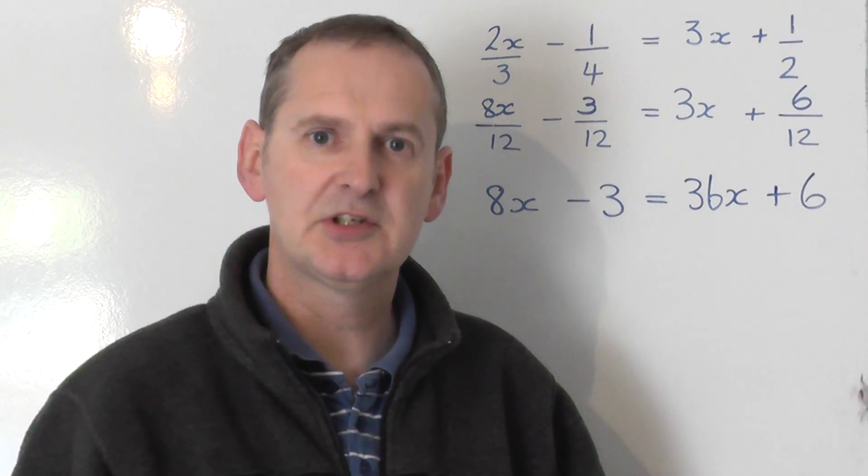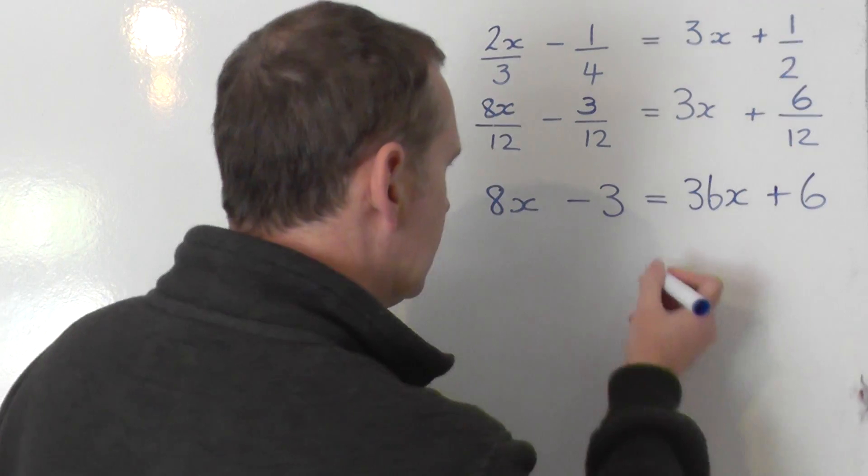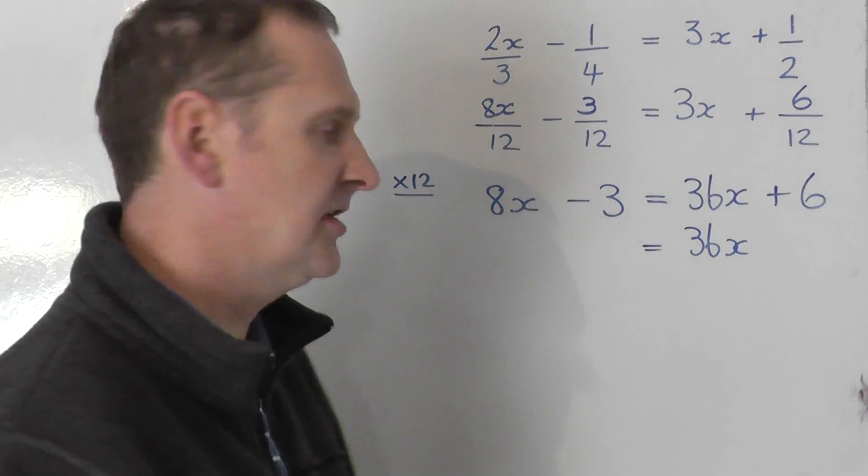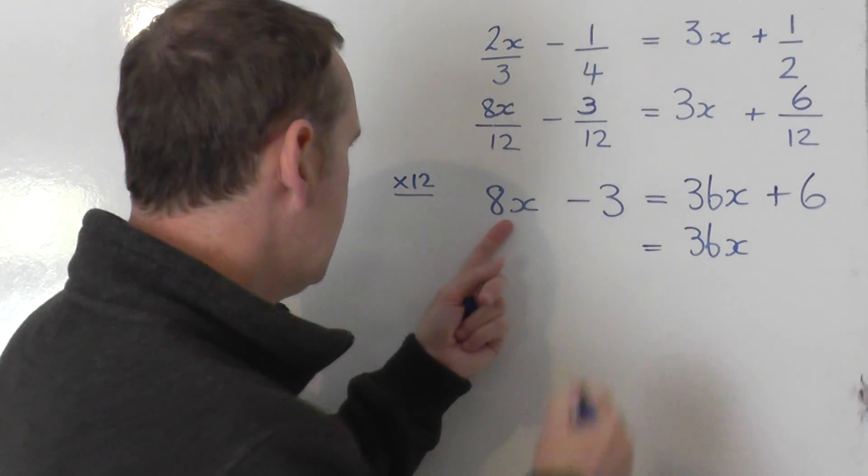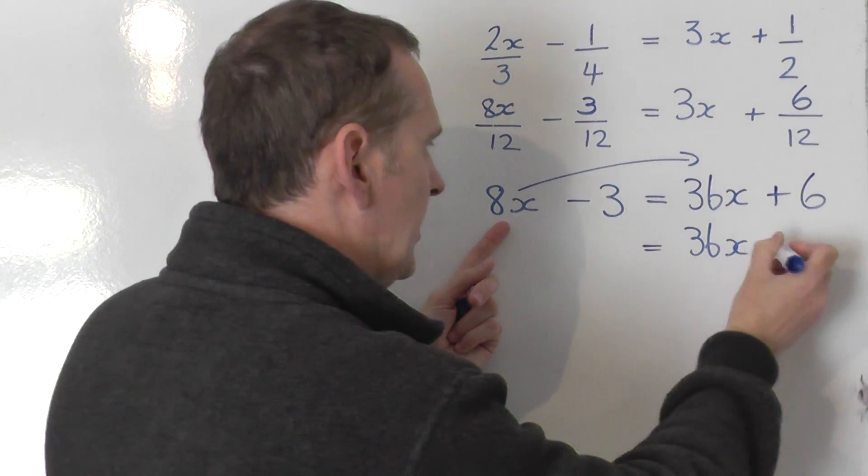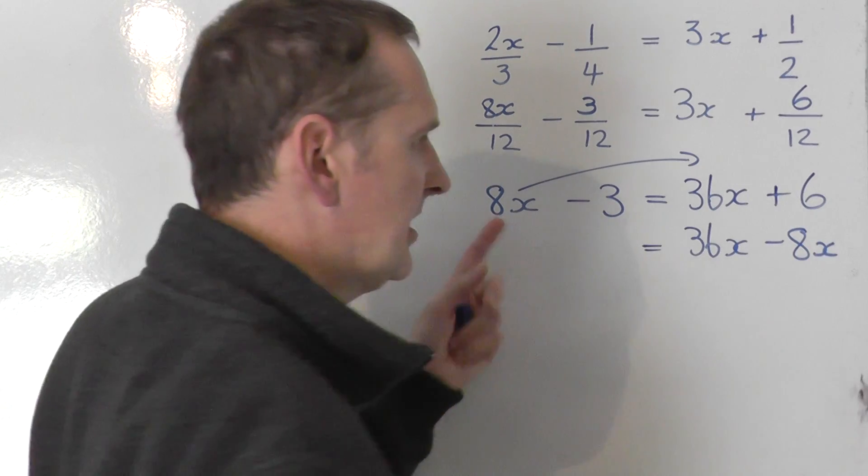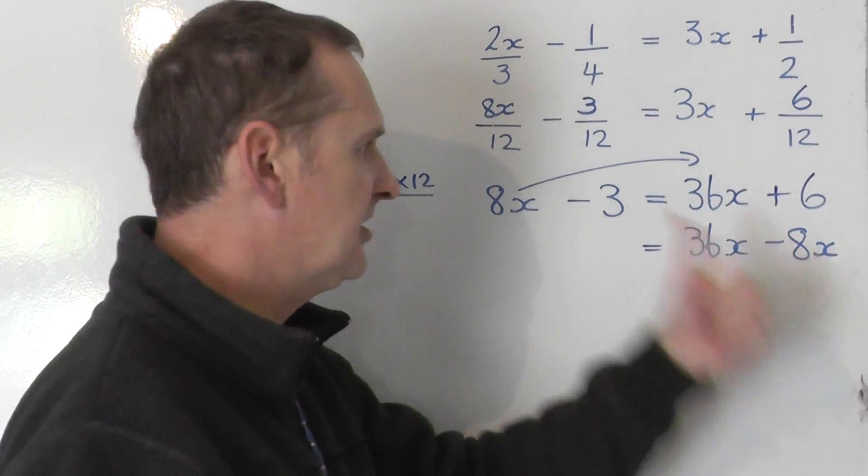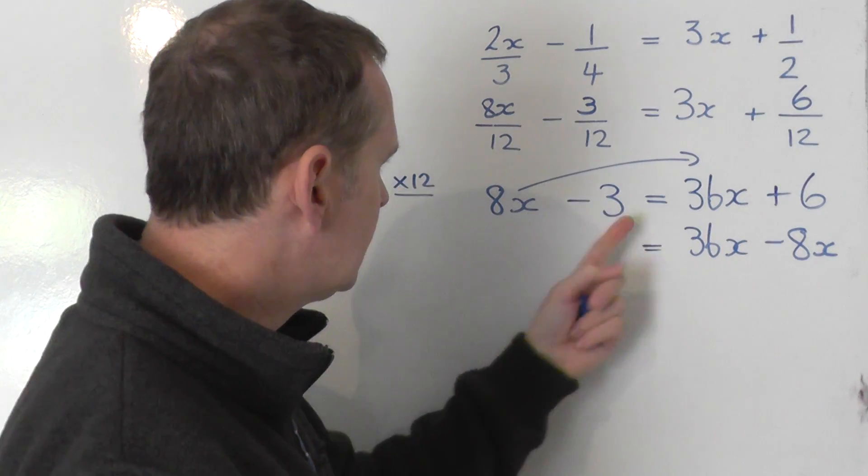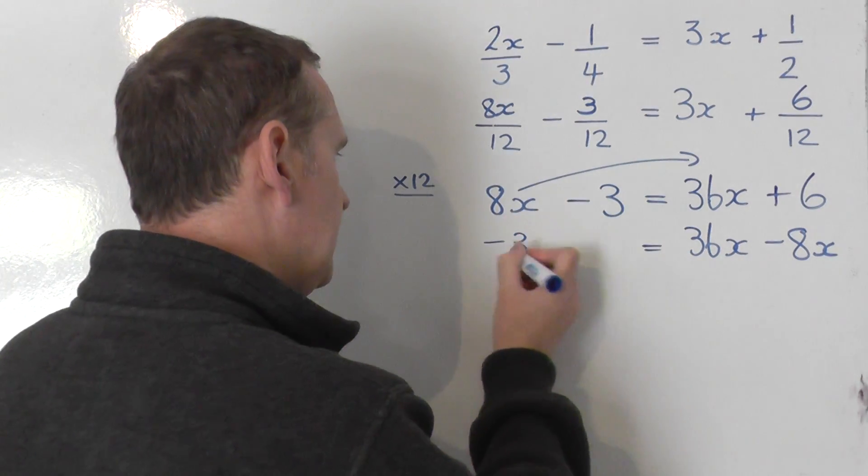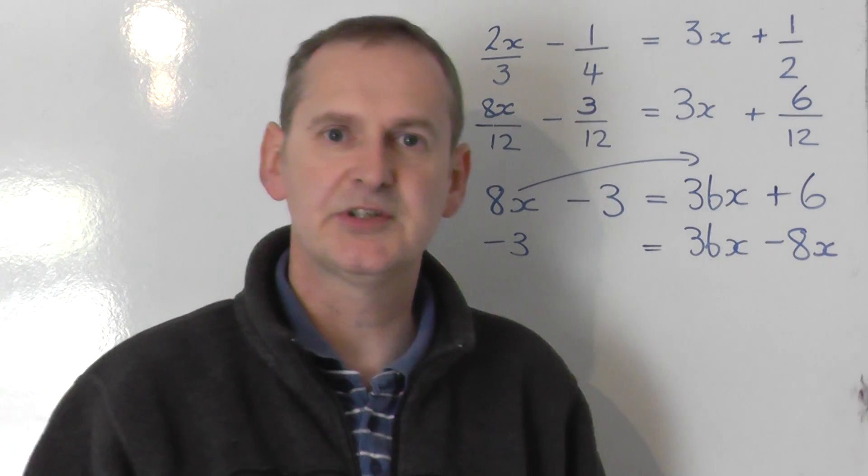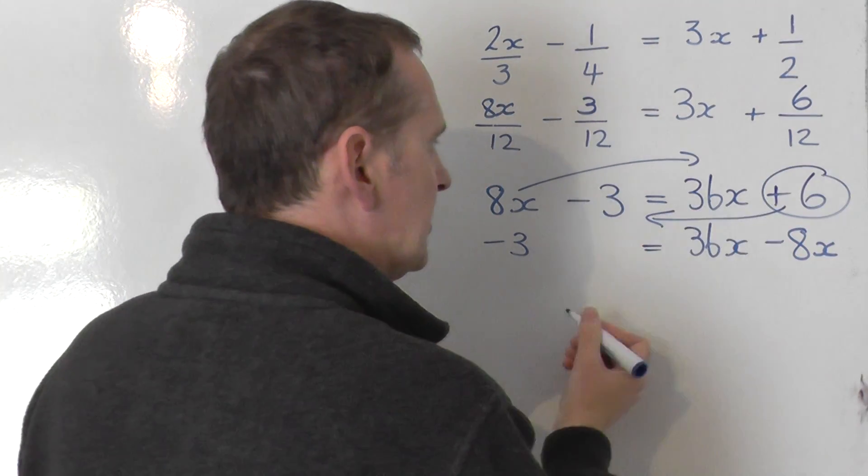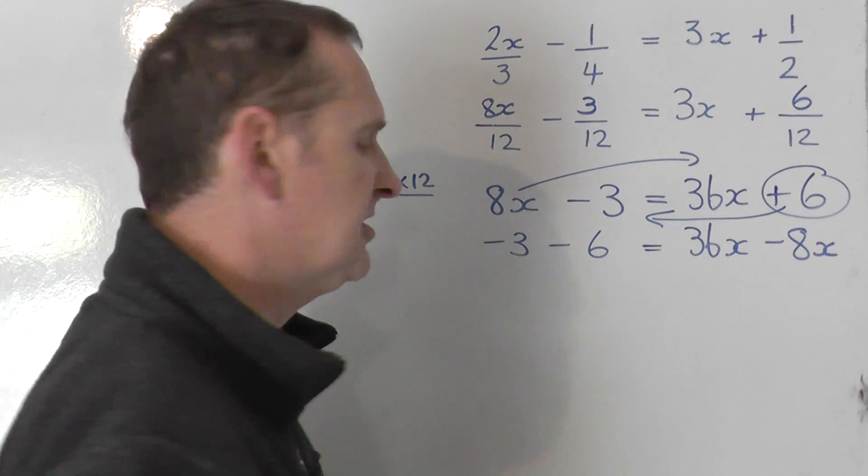And we've got x's on both sides. So we collect the x's on the side with most x's, which is the right-hand side. So the 36x stays where it is on the right. The 8x gets dragged across the other side, swaps to become a minus 8x on the right-hand side. And then the numbers, the 3 and the 6, go to the left. Well, the negative 3 is already where I want it. It doesn't swap sides, so it doesn't swap signs. And then the plus 6 gets dragged across to the other side. It swaps to become a minus 6.